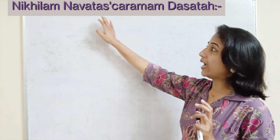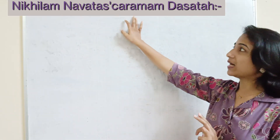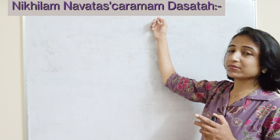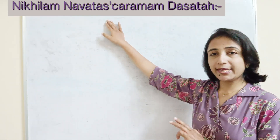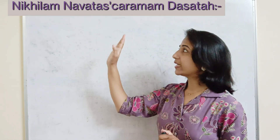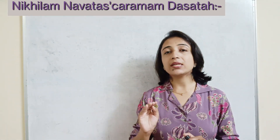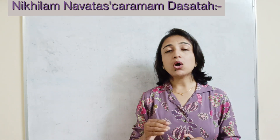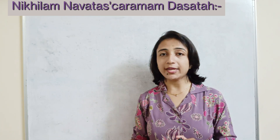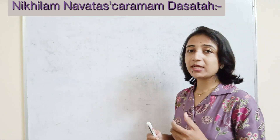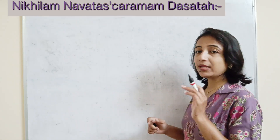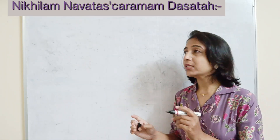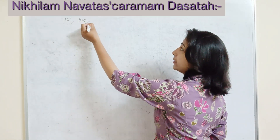The Nikhilam Sutra — Nikhilam Navatascaramam Dasatah — means 'all from 9 and the last from 10,' where Nav means 9 and Dasa means 10. For using this concept, we use numbers which are nearest to 10 or to a power of 10. Powers of 10 mean 10², which is 100, or 10³, which is 1000.